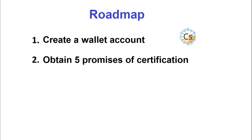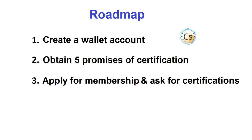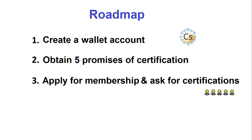To enter the Web of Trust, you need to find five or six members who agree to certify you. Wait until you have five promises of certification before moving to the next step, as your five certifications must be registered within two months of the application for membership. When this is done, apply for membership in Cesium and ask the certifiers to keep their promises. This is also the time to generate a revocation document, which will allow you to convert your member account back into a wallet account in case of loss or theft of your passphrases.